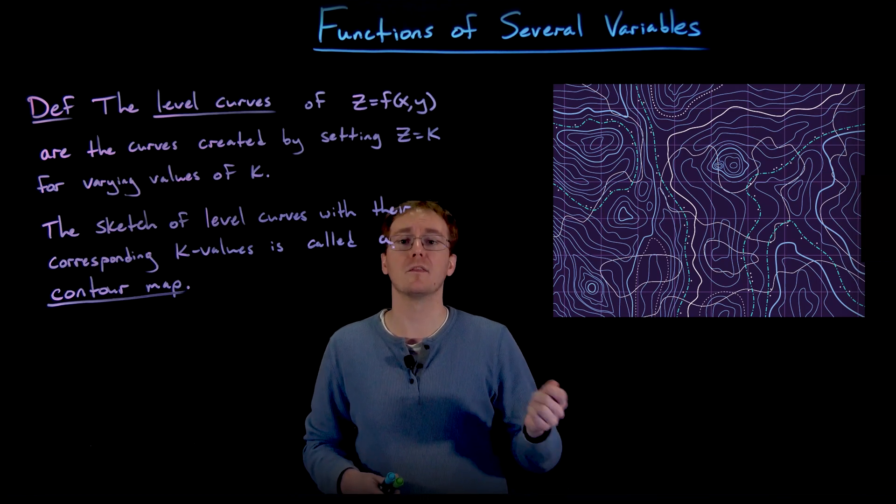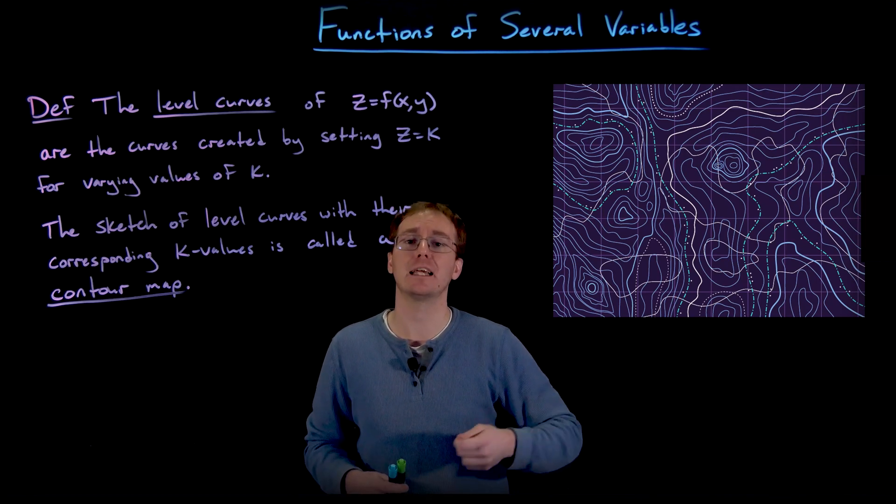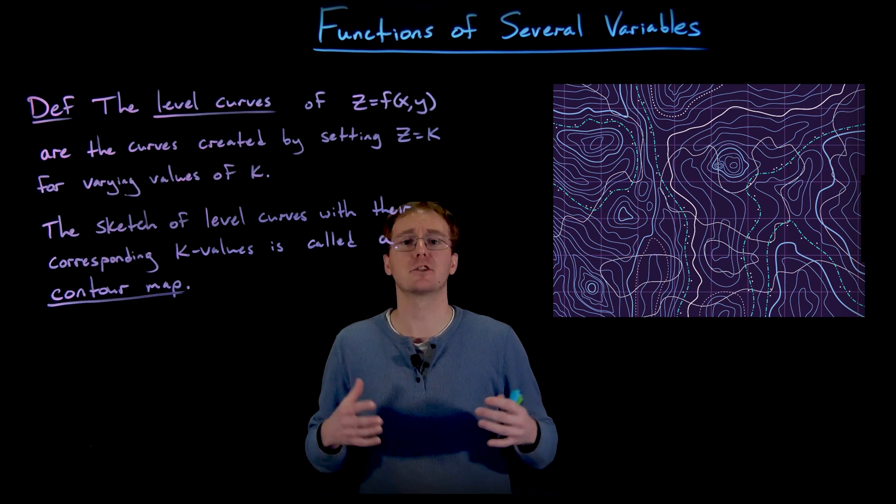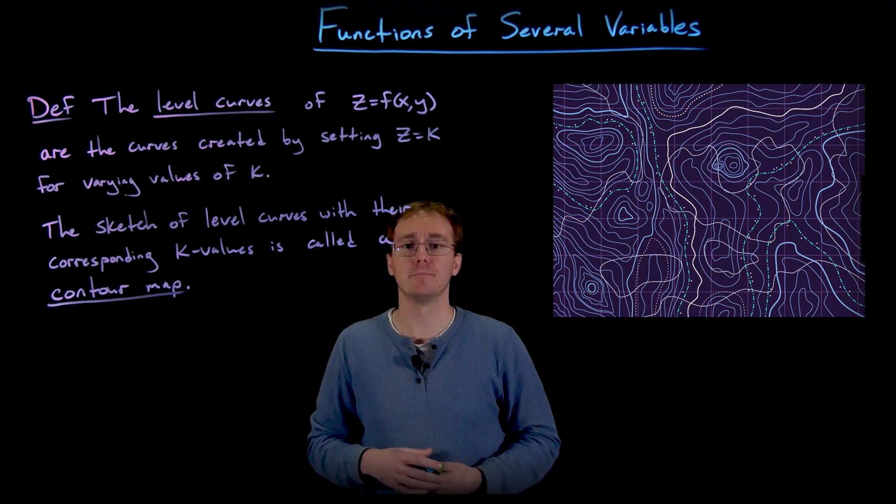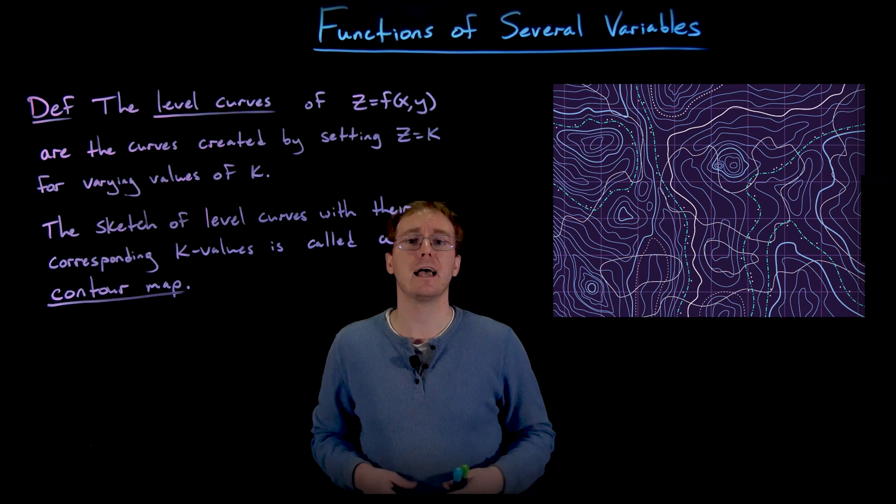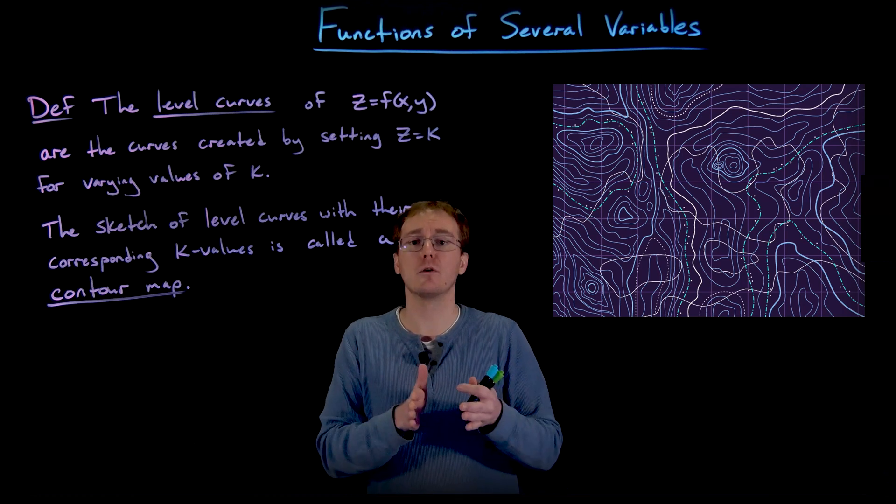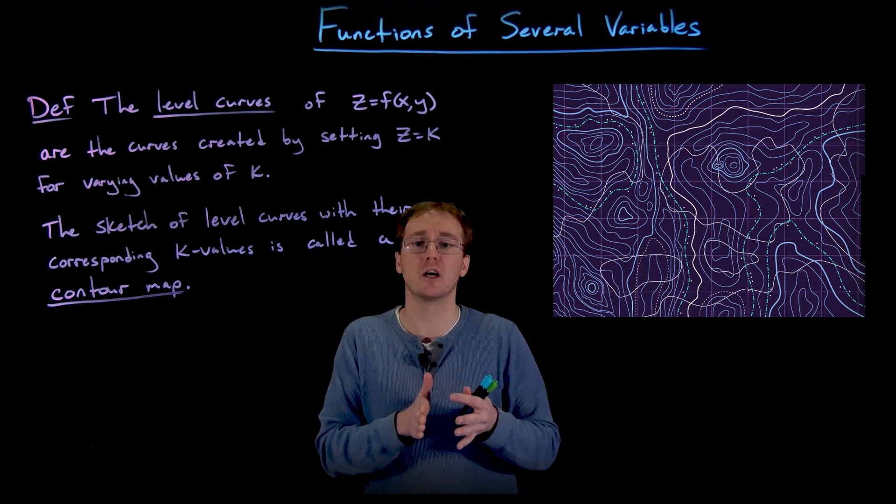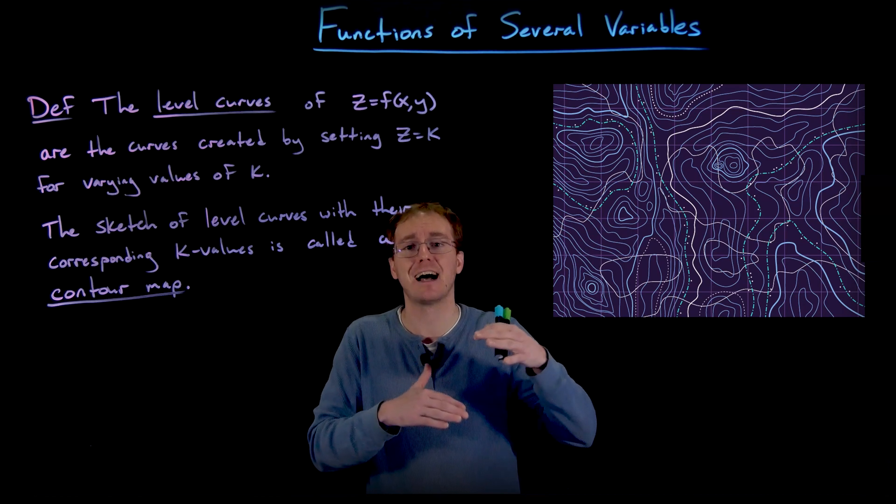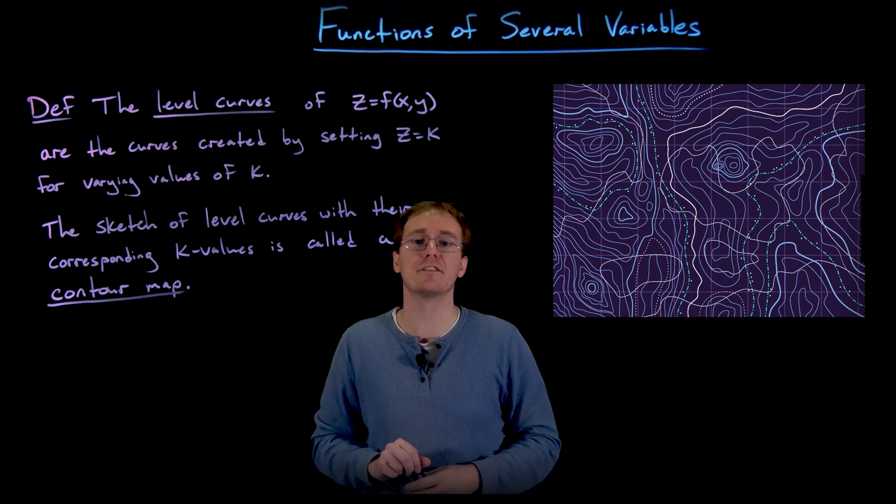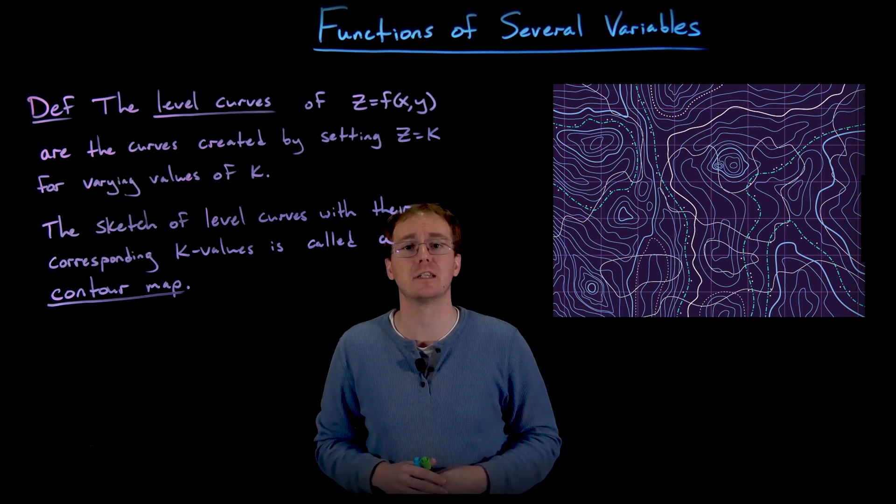But if you want to go from one line to the next, you're going to have to change elevation. And this is helping us create the picture of how tall our object is, and also how close our level curves are to each other relative to their differences in height or these different k values will give us an idea of how steep that surface is.